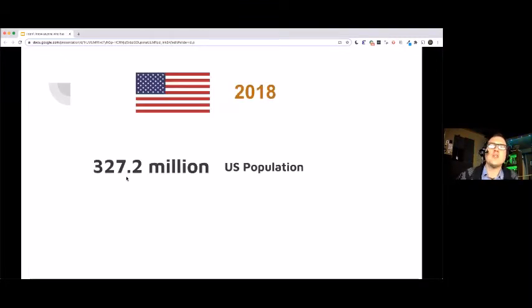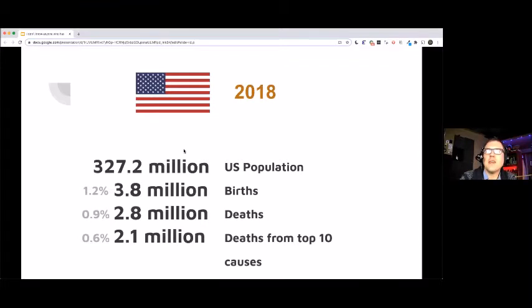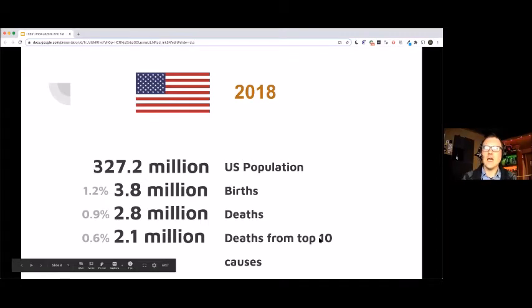Let's frame the question and some of the numbers in context here. I went back to 2018 in which the estimated number of Americans was about 329 million. In that same year, there were 3.8 million births. That's 1.2 percentage of that increase and 2.8 million deaths or about 0.9 percentage of the population in the United States passed away in just that year. So let's break that down a little further.